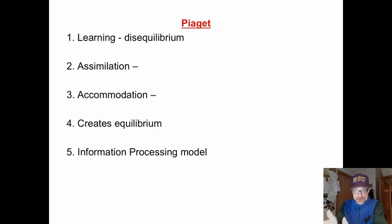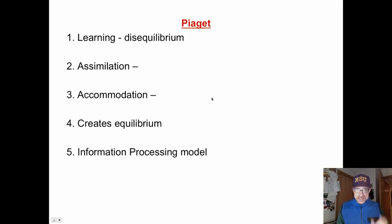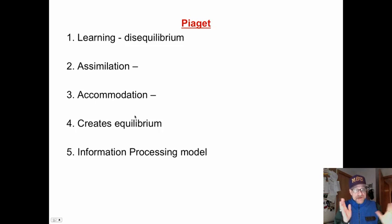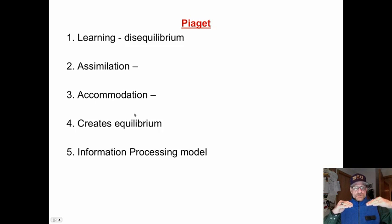We deal with disequilibrium through assimilation and accommodation. Assimilation means taking in new information and putting it in the right schema or file folder in your head — that's adding to existing information. Sometimes new information is brand new or conflicts with old information; then we use accommodation, which means creating a new file folder or reorganizing an existing one. This creates equilibrium once again.